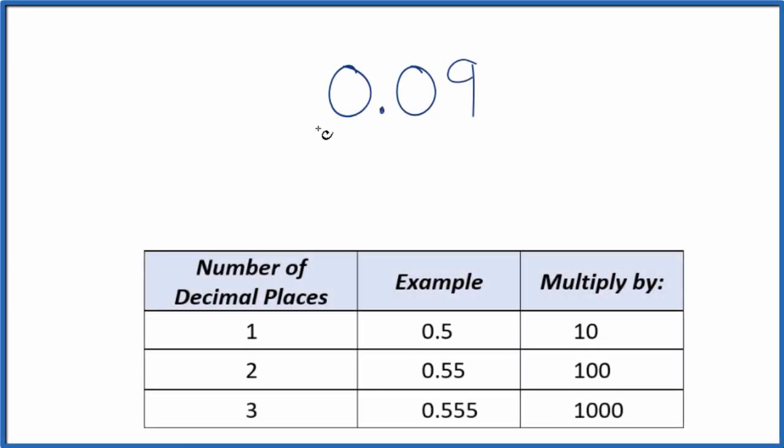If you need to convert 0.09 to a fraction, here's how you do it. First, we think about 0.09 as 0.09 over 1. It's still equal to 0.09, it's just that we've divided by 1. It's the same value, but now we have the start of a fraction.